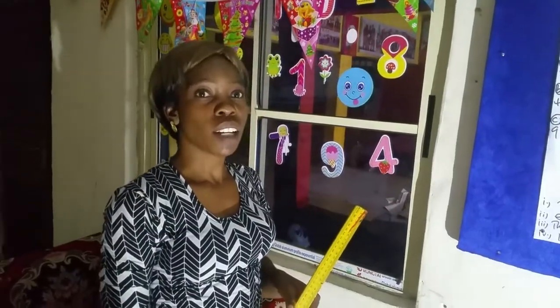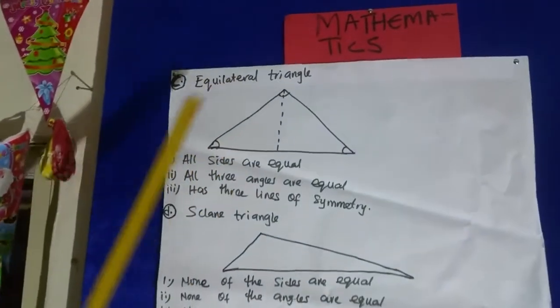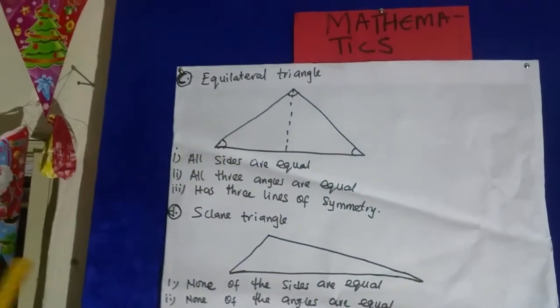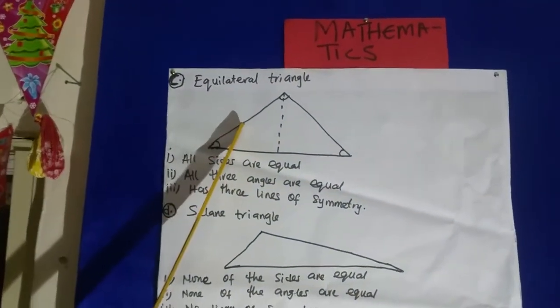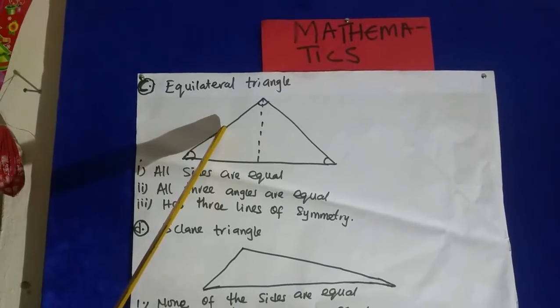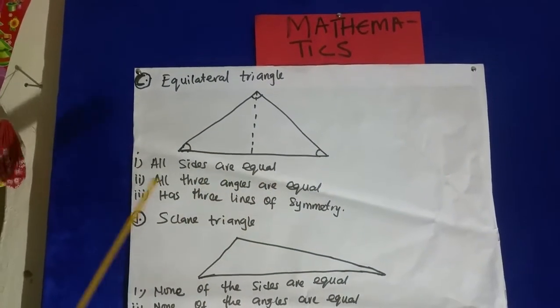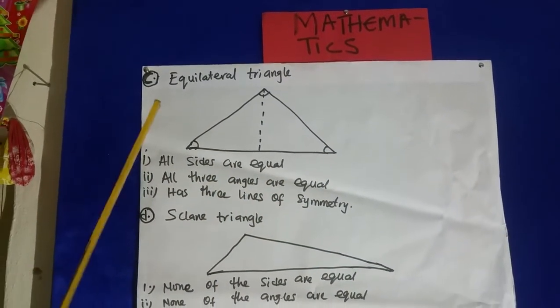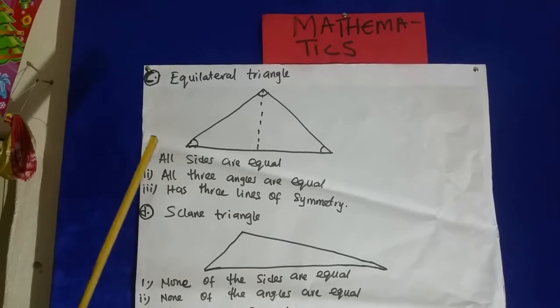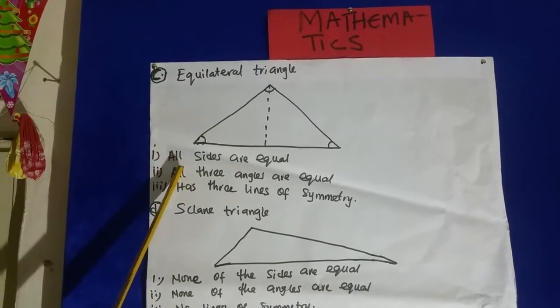We have the equilateral triangle. This is the shape of an equilateral triangle. All sides are equal — it has three sides and all three sides are equal.